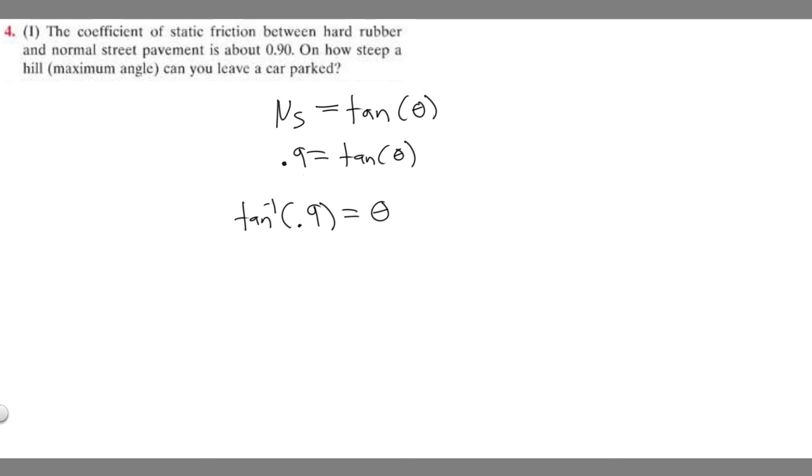So if you go ahead and do this, the arc tangent of 0.9, you're going to get theta is equal to 41.987. And so I can, or you can just round this if you want. So theta is going to be about 42 degrees, because it's an angle, so 42 degrees.